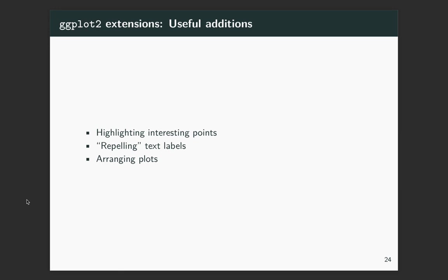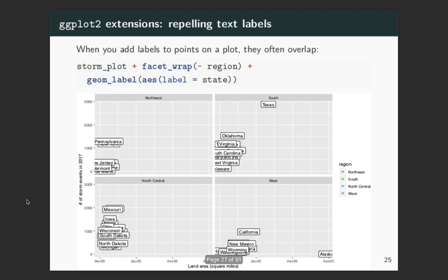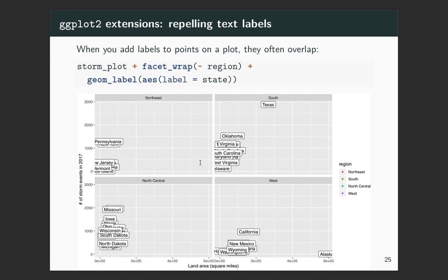Next let's talk through some other geoms you can add and packages that help with things like arranging different ggplot objects to create one figure. I want to start with repelling text labels. I've taken the storm plot and added faceting by region — four different plots for four different regions — and added a label on each point. You can see this point is for Texas and this one's for Alaska. A lot of times when you use geom_label, you get cases where everything's on top of each other and labels are overlapping or going off the page, making them not very helpful.